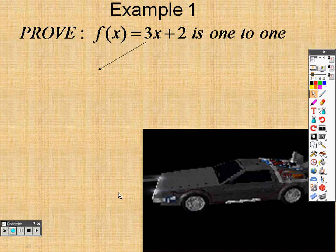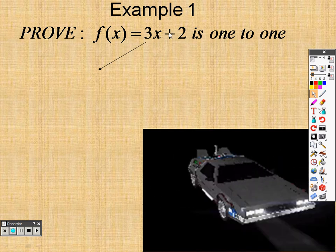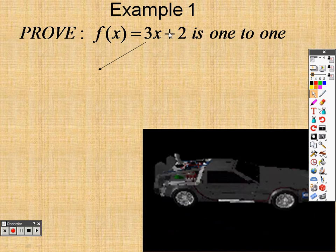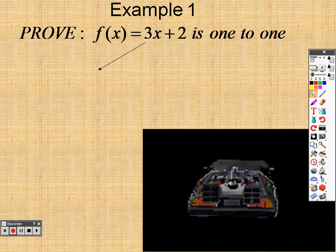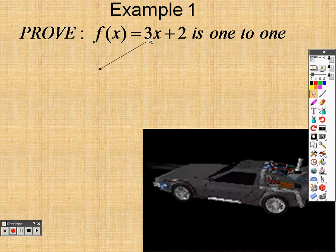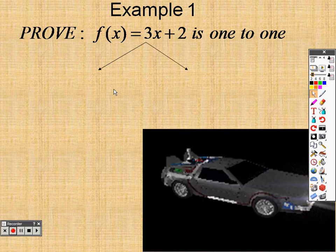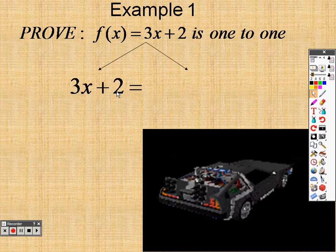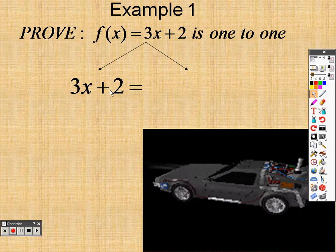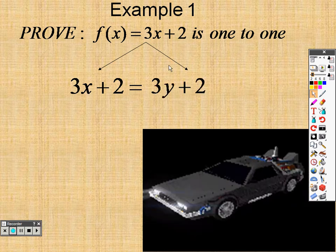So when we take a look here at example 1, I want to prove that this is one-to-one. Well, it's actually pretty simple to prove if something is one-to-one or not. And here's what you do. You take 3X plus 2, and you write it down here. And what I want you to do is you write the same thing set equal to itself, except instead of an X, we put a Y there. So same item.